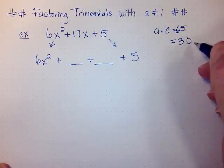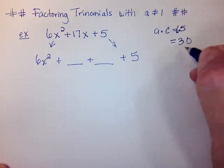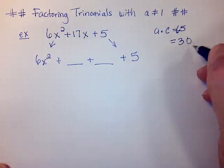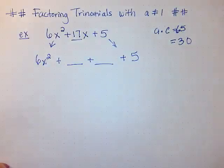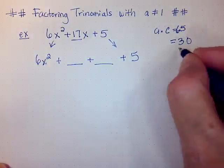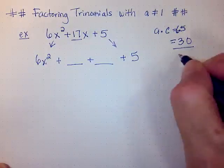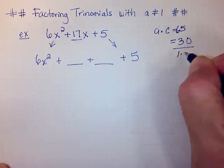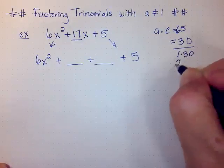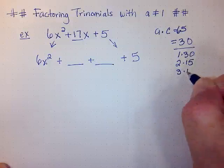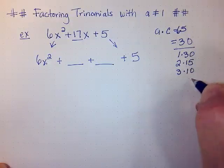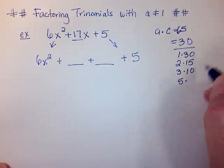So a times c is 30. Now I need to think: what are the factors of 30 that would multiply to give me 30 and add to give me b, which in this case is 17? If I list the factors of 30, I can start with 1 times 30, 2 times 15, 3 times 10, and 5 times 6.